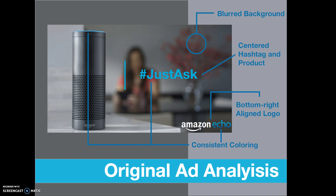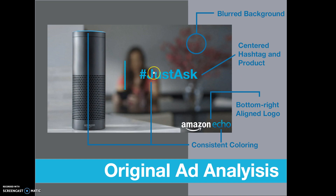Now going on to talk about design principles — first, proximity. As you can see, there are two areas of proximity here. First is the Just Ask text in correlation with the product. We can tell these things belong together, separated by a bar. Then our other area of proximity is the Amazon Echo logo down here, so that when our eyes go left to right, we'll eventually land on it, knowing what that brand is.